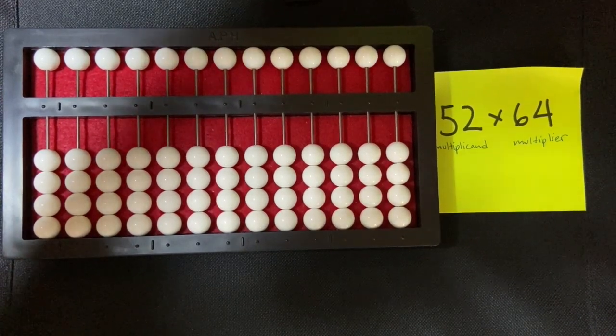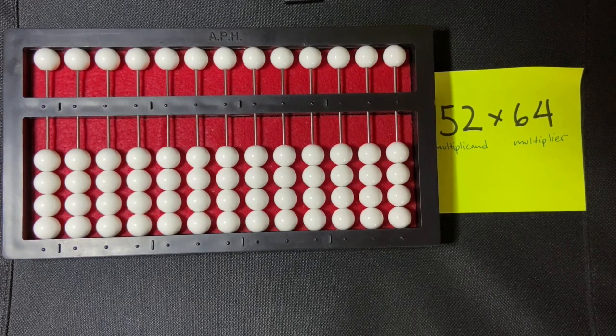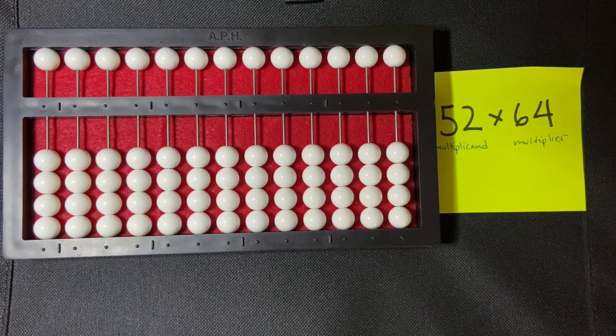All right, now I'm going to be doing a two-digit by two-digit multiplication using the TSBVI method, which is the Texas School for the Blind and Visually Impaired method, and that's an indirect method.